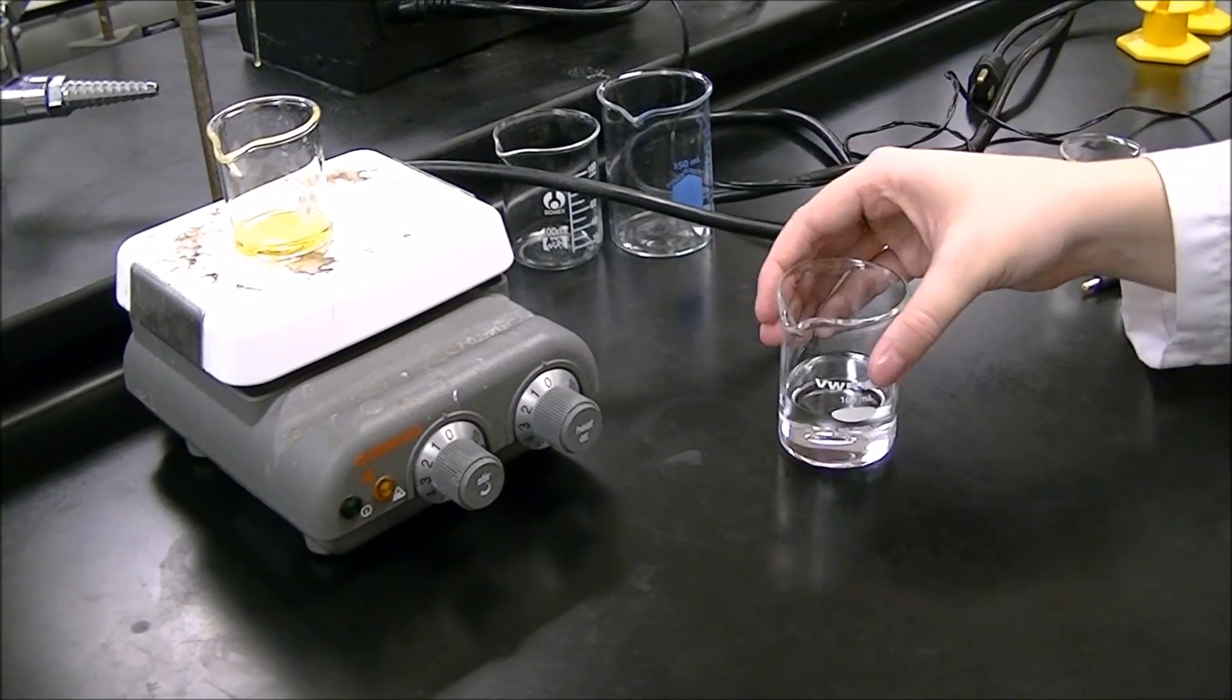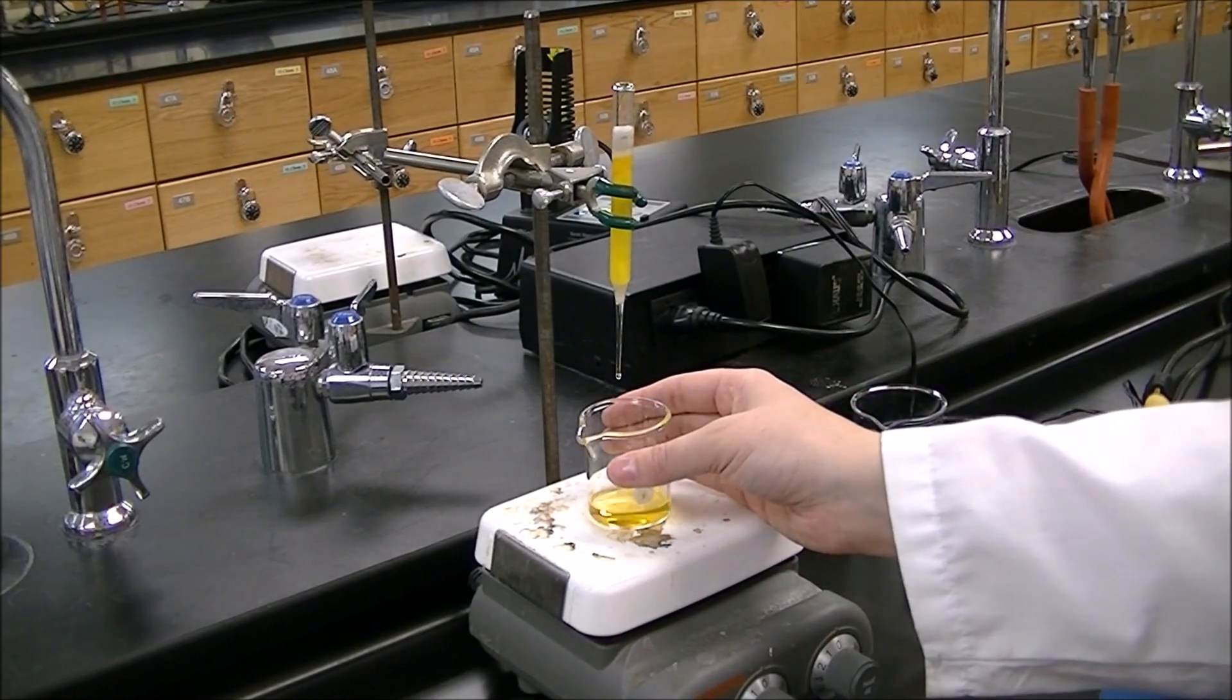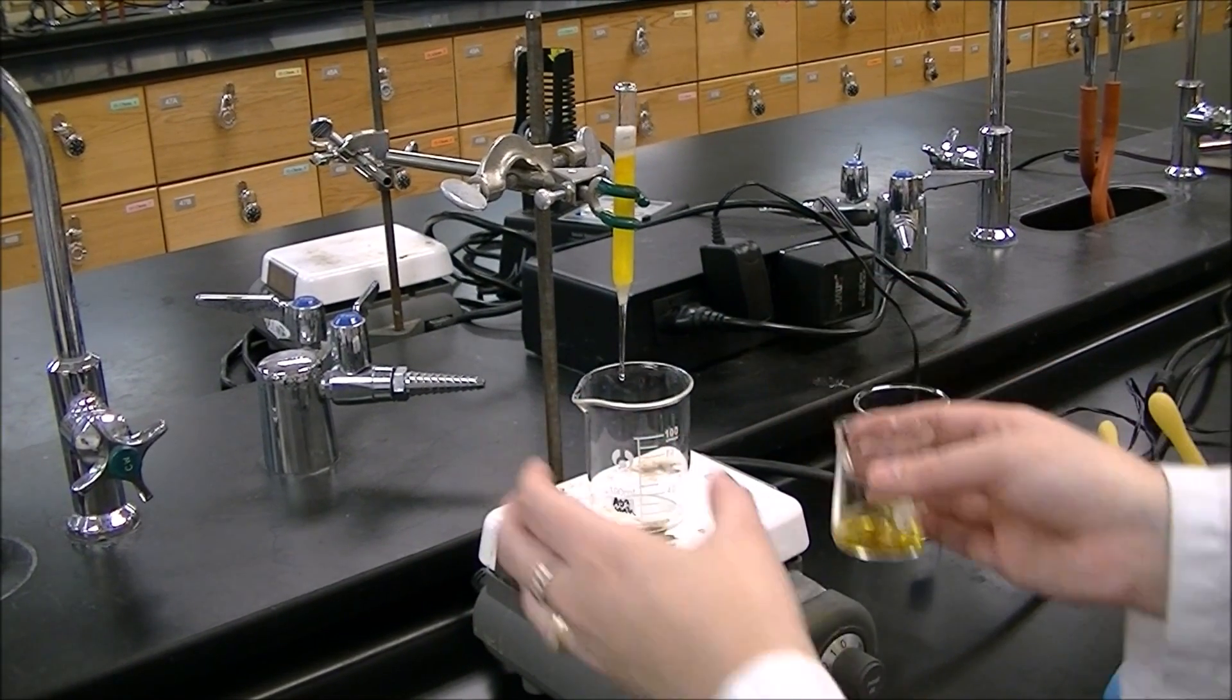You need to remember to regularly mix your eluent. Once you feel you've collected enough trans isomer, switch collection beakers.